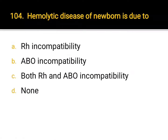Hemolytic disease of the newborn is due to: A. Rh incompatibility, B. ABO incompatibility, C. both Rh and ABO incompatibility, D. none. Correct answer: C. Both Rh and ABO incompatibility.